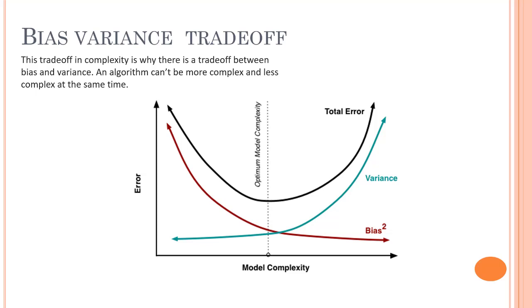Before we end this section, let's cover a few more things. Let's start with bias-variance trade-off. We already know what bias and variance are. Now we should know that there is a trade-off between both of them depending upon the model complexity. We've seen what kind of problems we can face when there is high bias, and also what kind of problems we face when we have high variance.